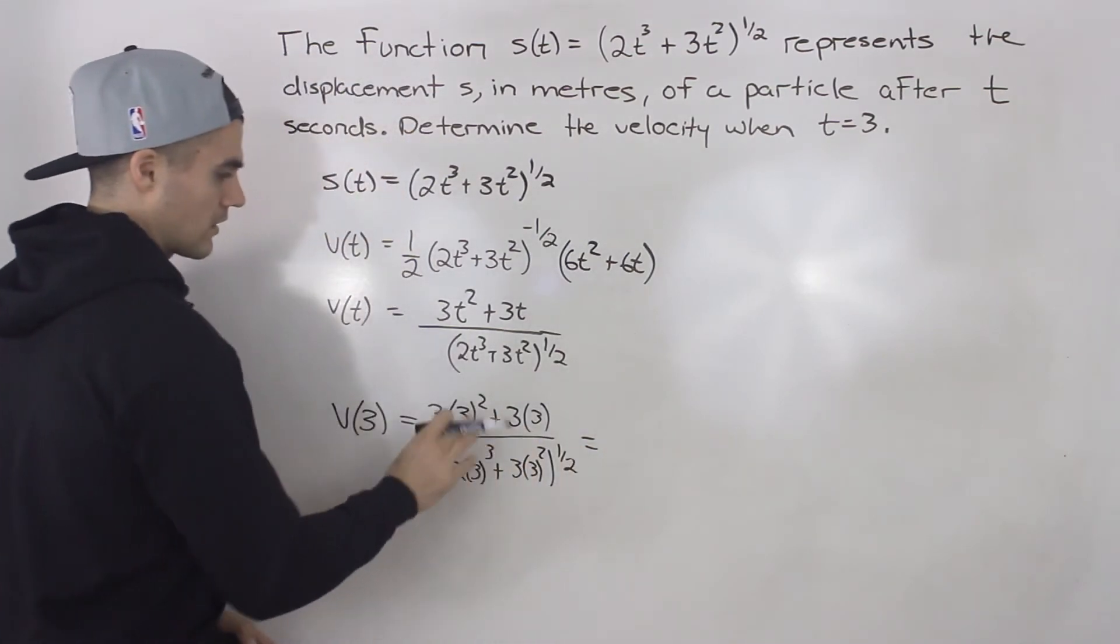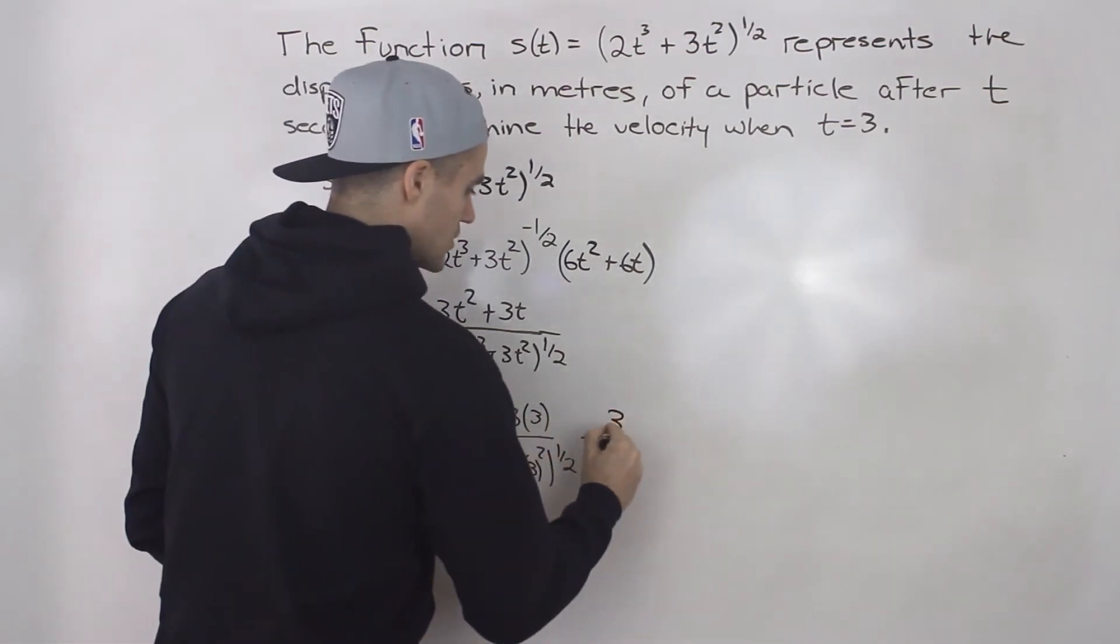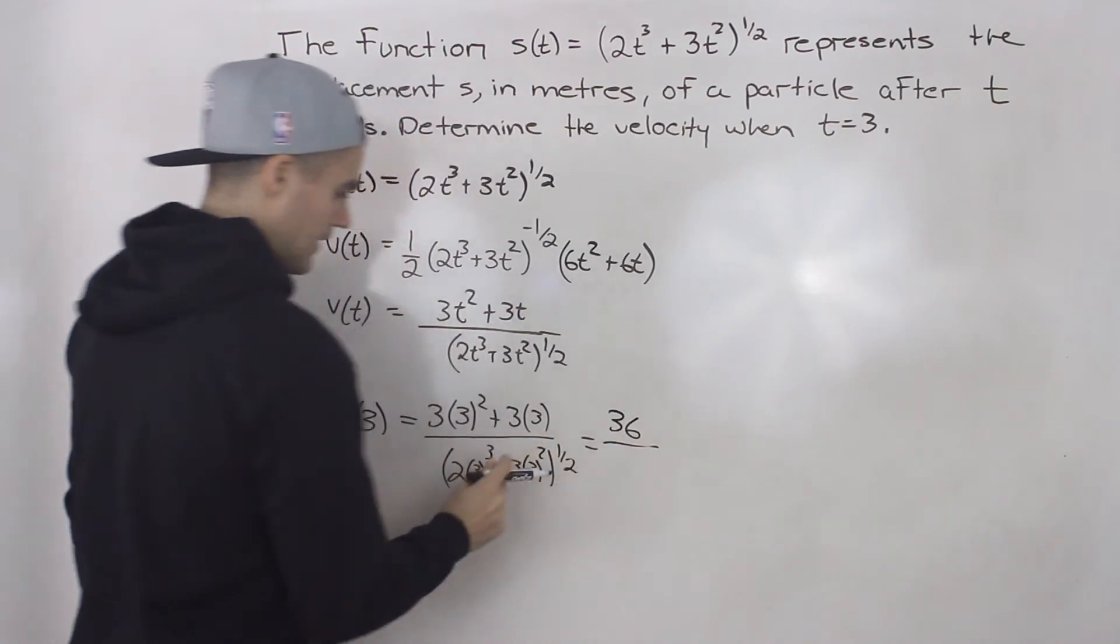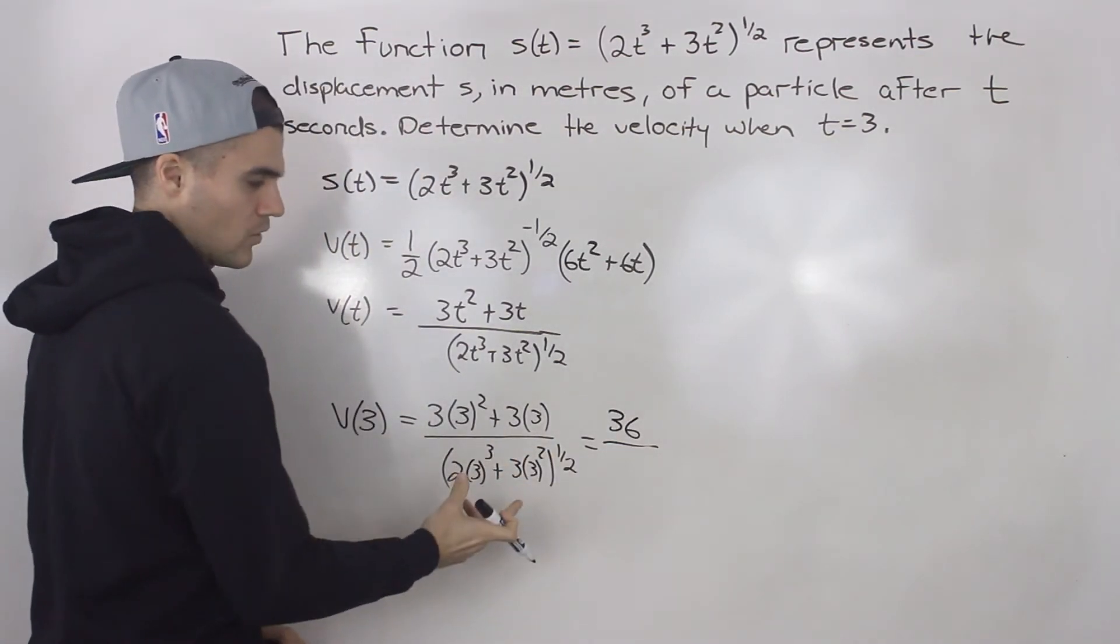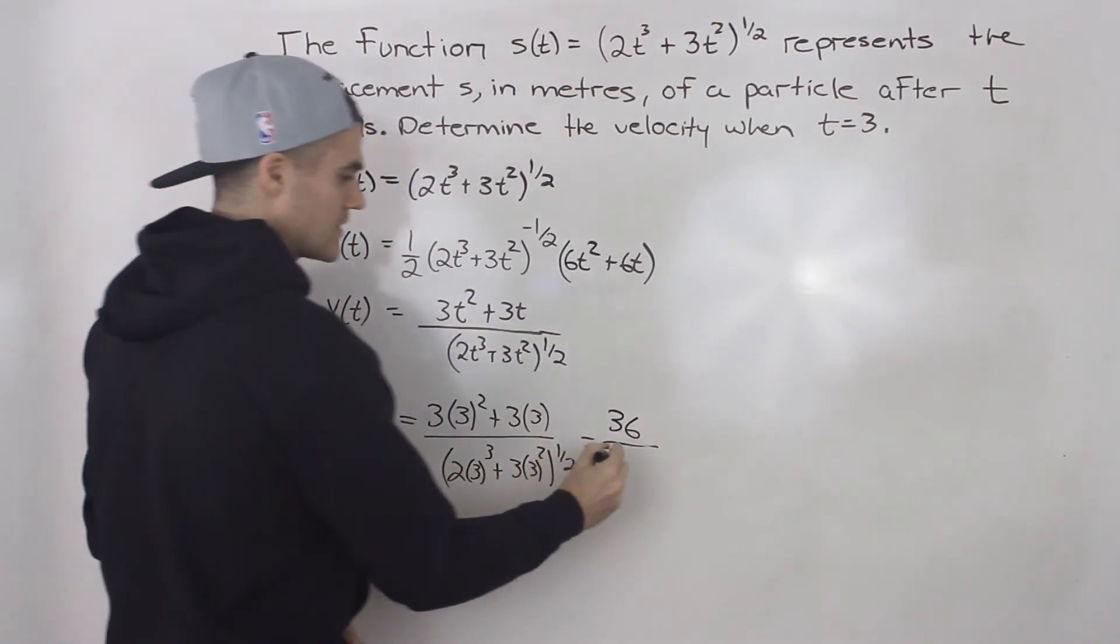And when you do all of this in your calculator, at the top you would end up getting 36. And then this bracket here would be 81, and then 81 to the power of a half is 9. 36 over 9 is 4.